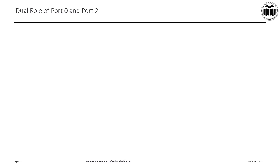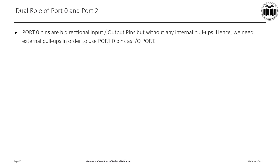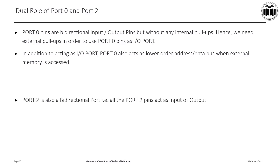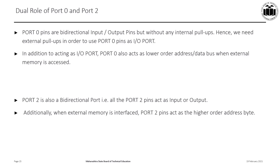Port 0 and Port 2 pins have dual roles. Port 0 is a bi-directional I/O port but has no internal pull-up resistors, so external pull-up resistors must be added. In addition to I/O, Port 0 also acts as the lower-order address or data bus when external memory is accessed. Similarly, Port 2 is bi-directional and can function as input or output, but when external memory is interfaced, Port 2 pins act as the higher-order address byte. Port 2 has internal pull-up resistors and does not require external ones.